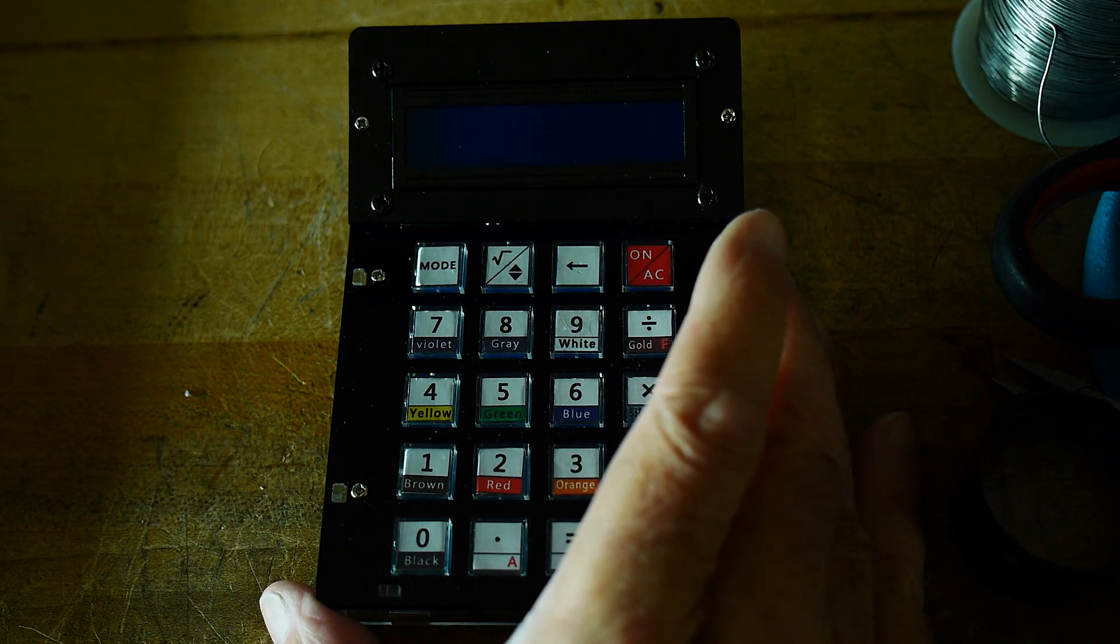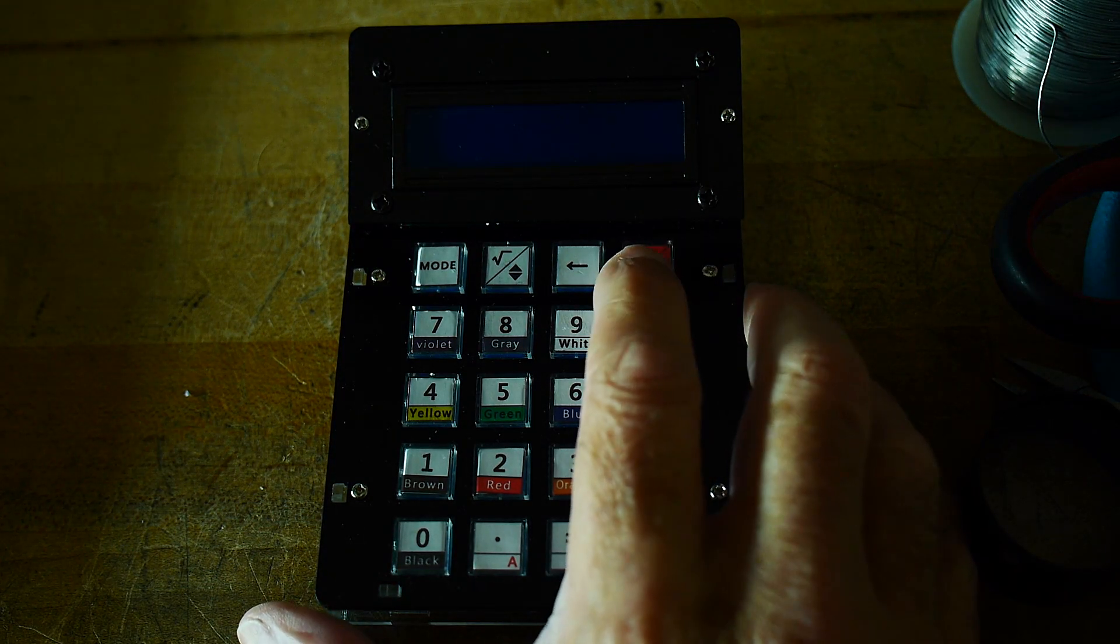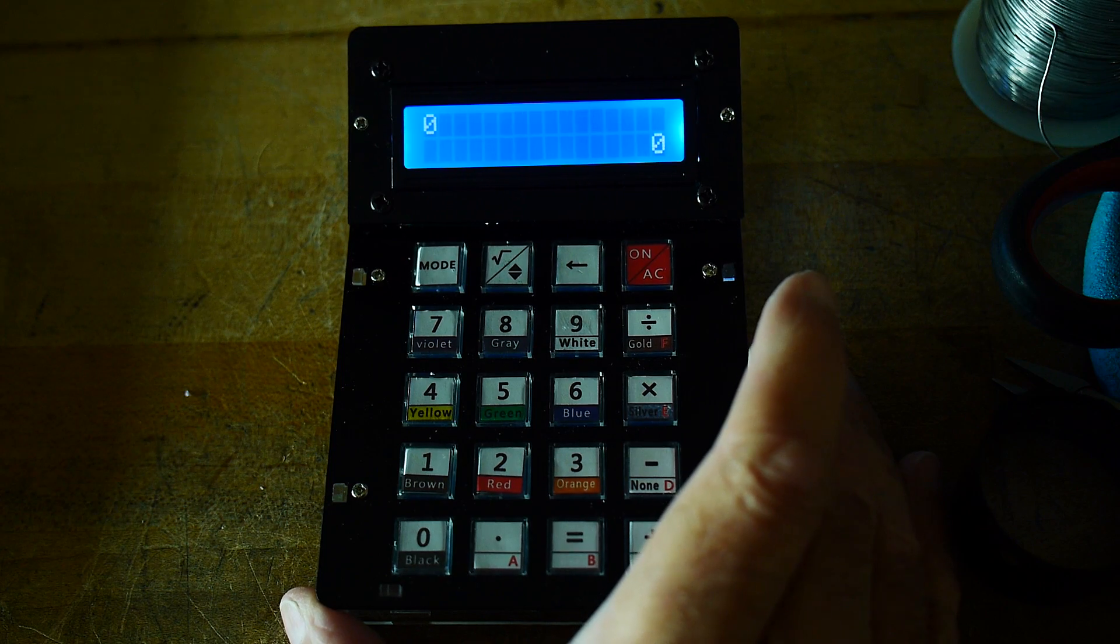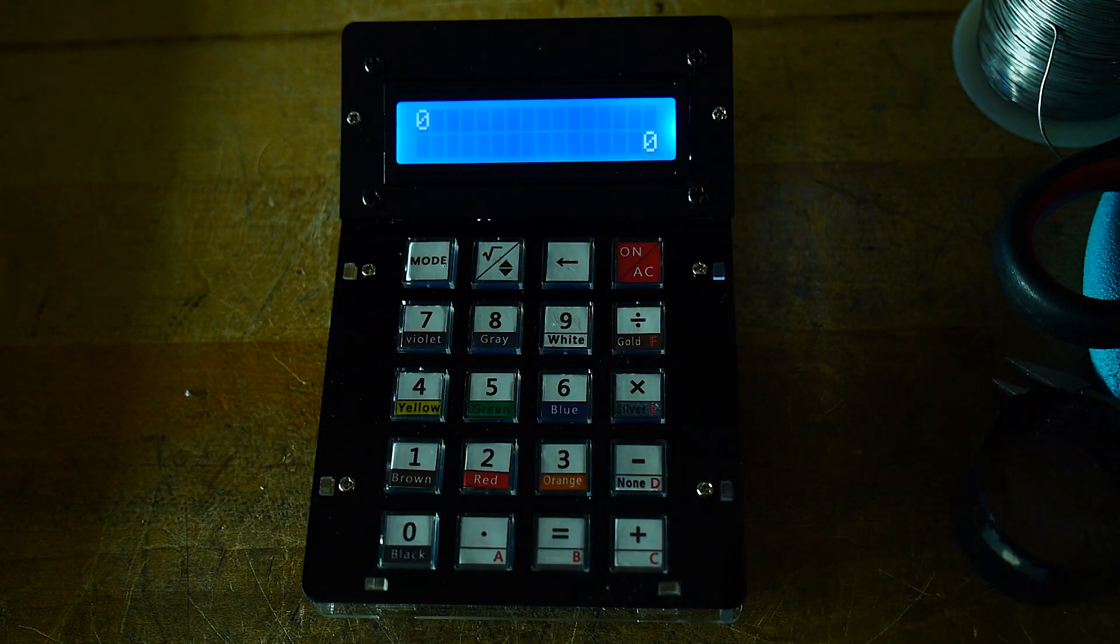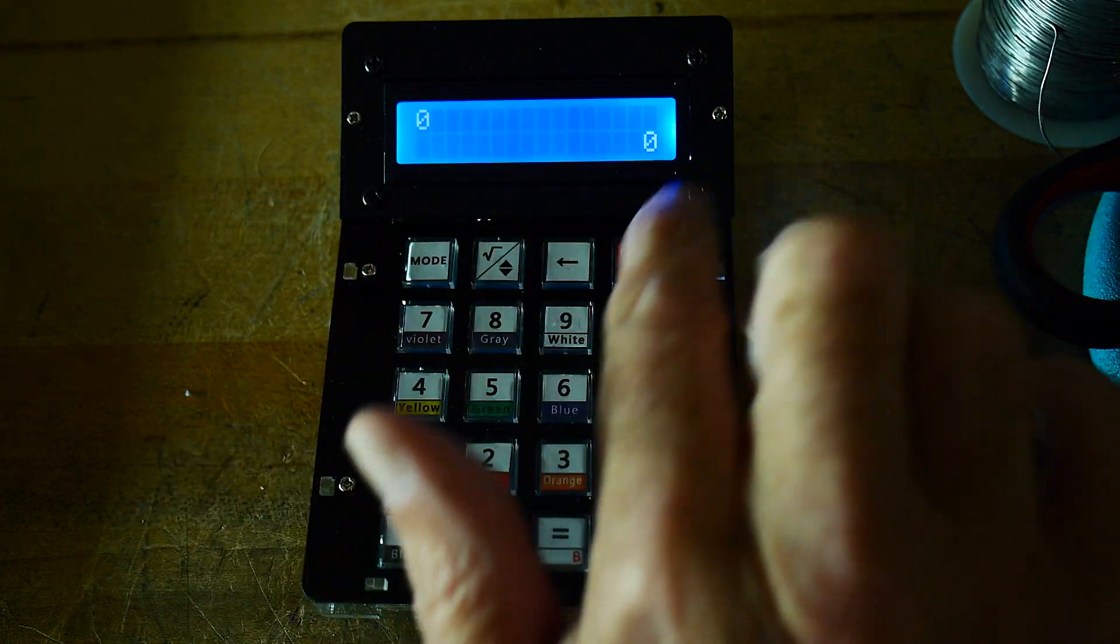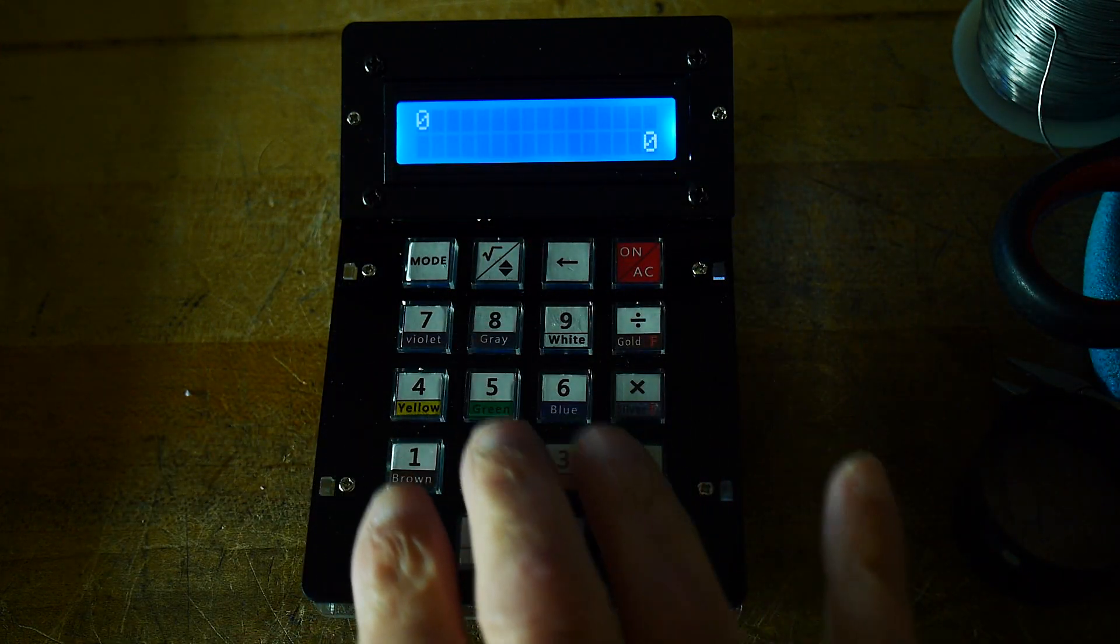Alright, let's go over this calculator. To turn it on you press the red button and you get a display. I have the room lights down and the exposure of the camera set so you can see the display. I hope you can see the keys here.